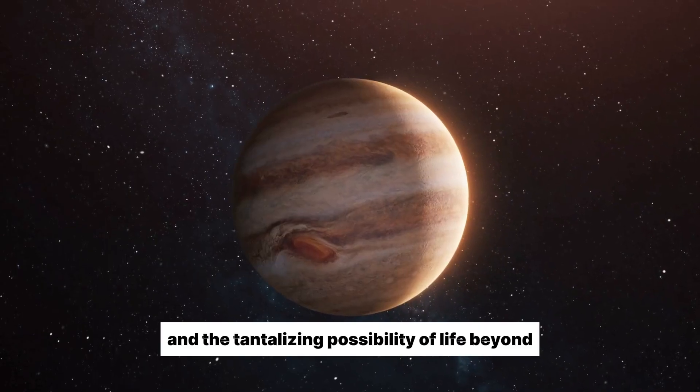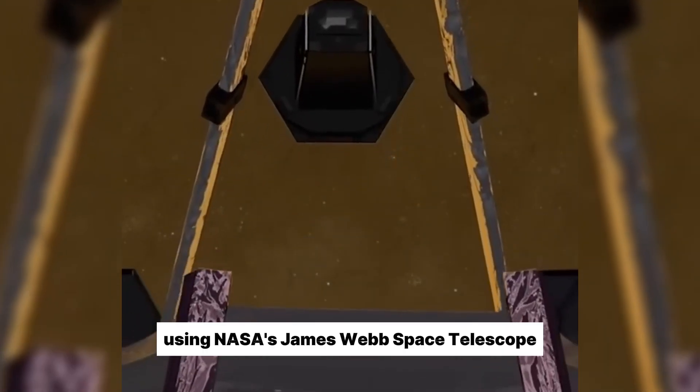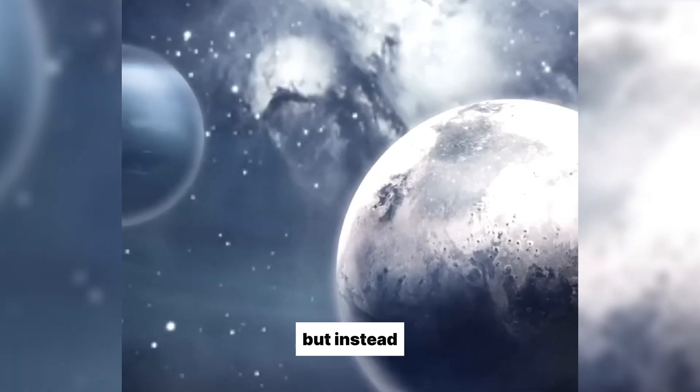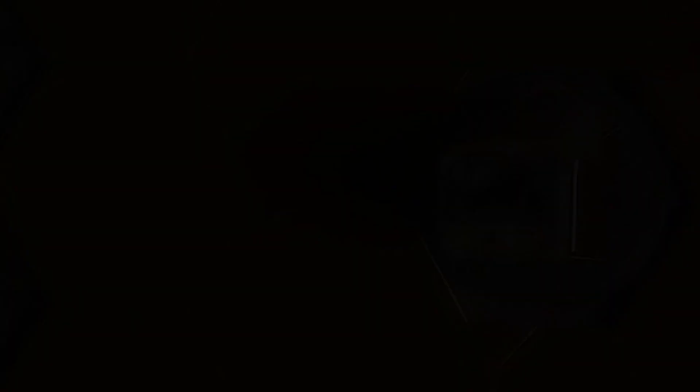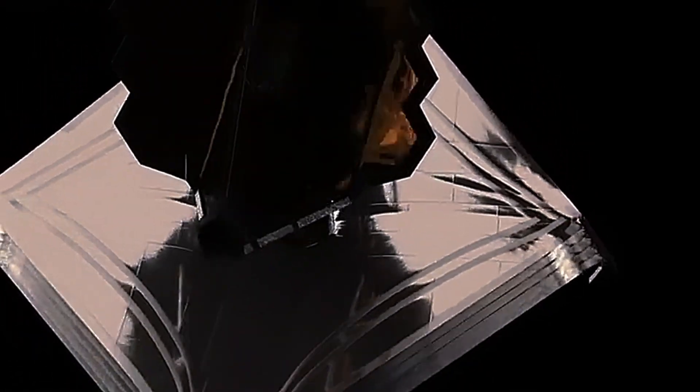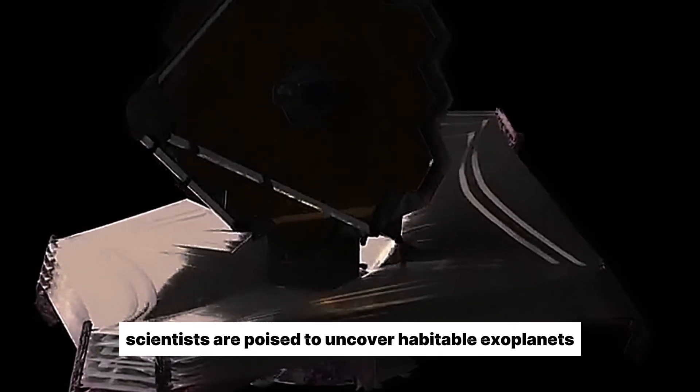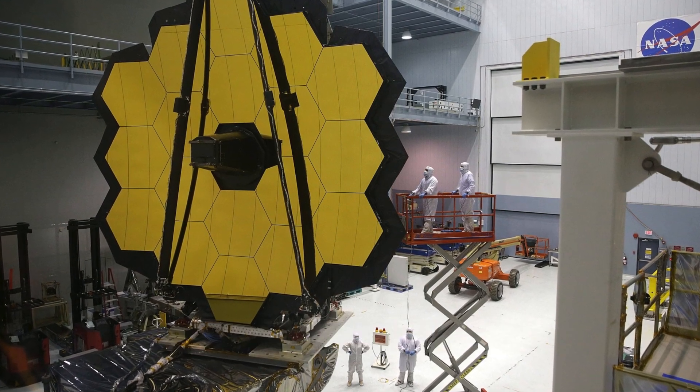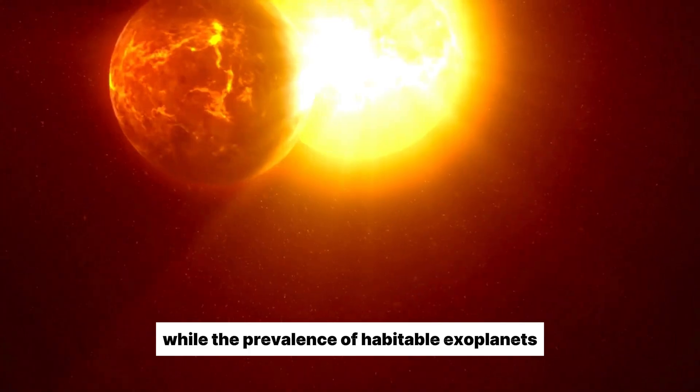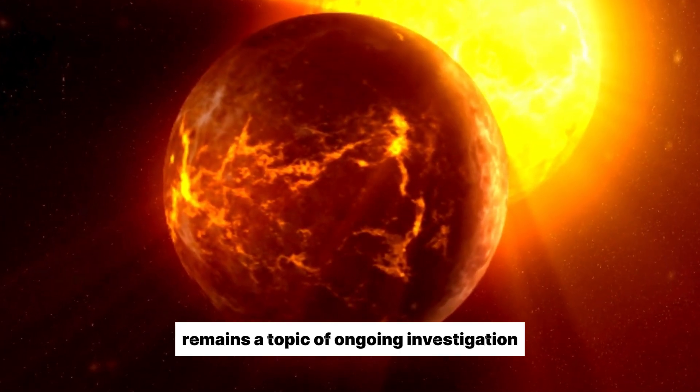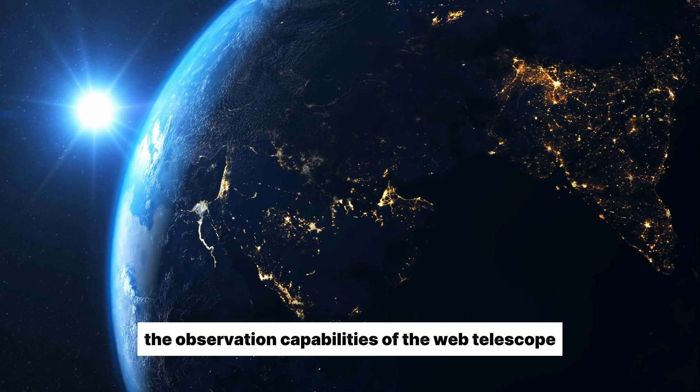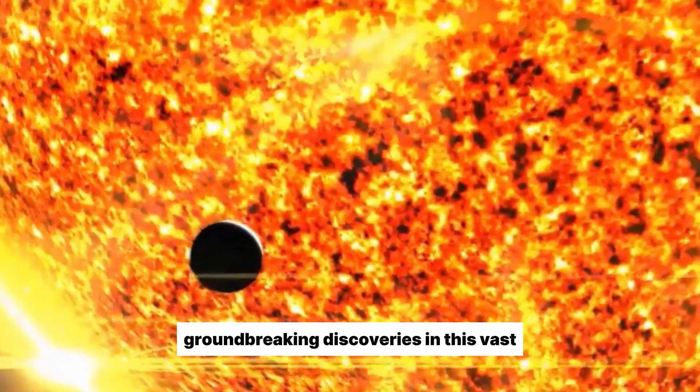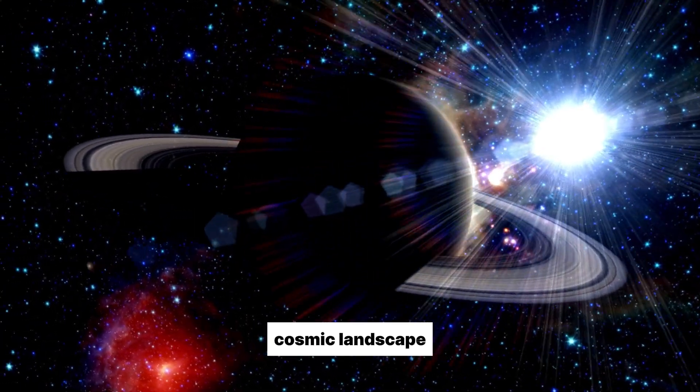However, the implications of directly imaging exoplanets extend far beyond visual allure. These images provide crucial insights into the origins of our universe and the tantalizing possibility of life beyond. Using NASA's James Webb Space Telescope, scientists have just found planets that did not orbit stars but instead floated freely in space. Armed with these astounding revelations, scientists are poised to uncover habitable exoplanets, a long-standing aspiration in the field of astronomy. While the prevalence of habitable exoplanets remains a topic of ongoing investigation, the observation capabilities of the Webb Telescope position it at the forefront of groundbreaking discoveries in this vast cosmic landscape.